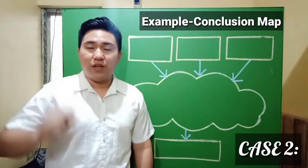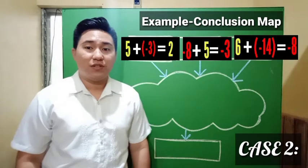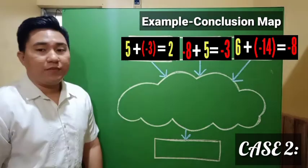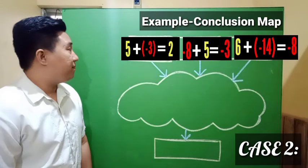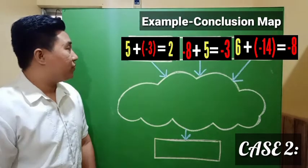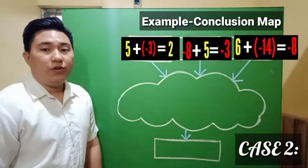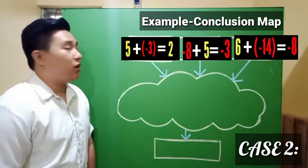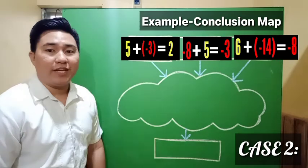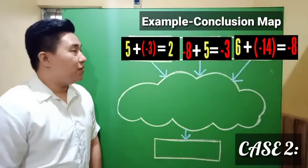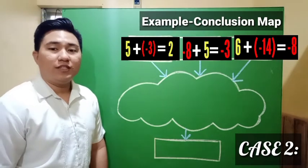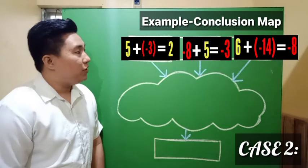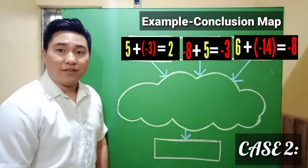Case number two. Here are the examples. Example one: 5 plus negative 3 equals 2. Example two: negative 8 plus 5 equals negative 3. Example three: 6 plus negative 14 equals negative 8.